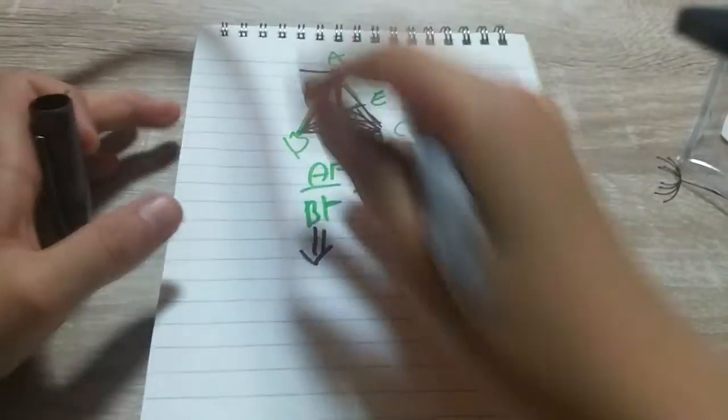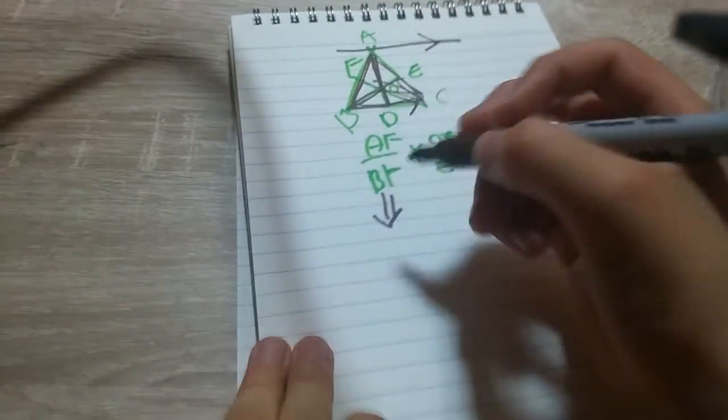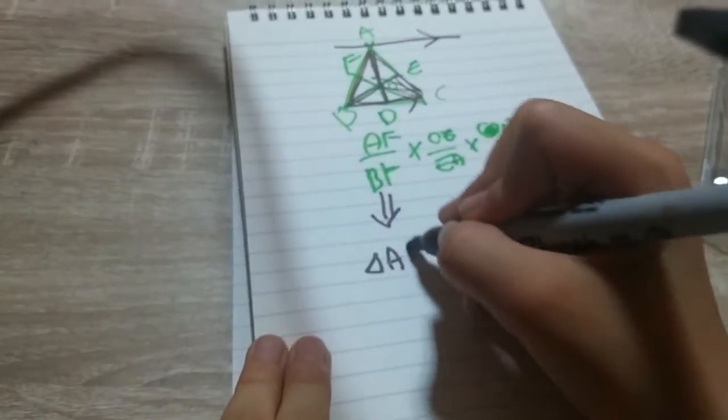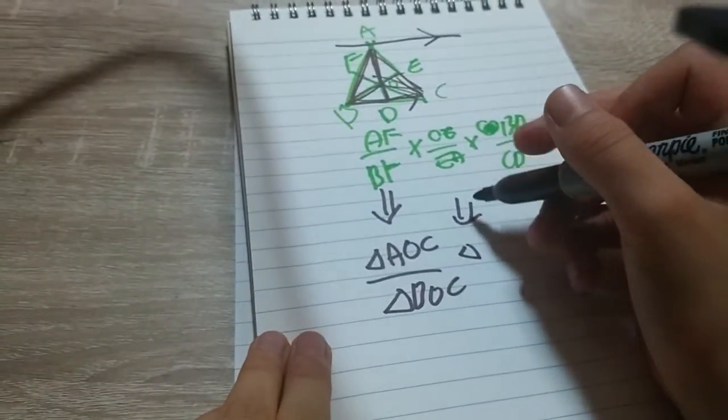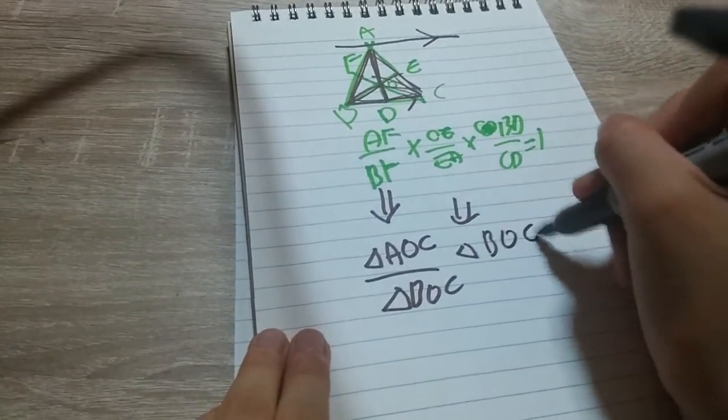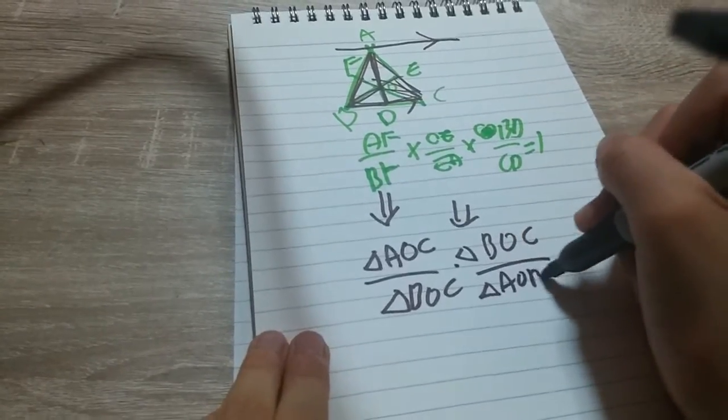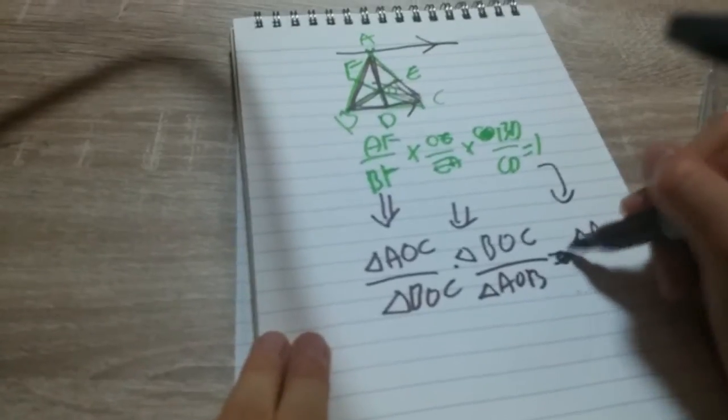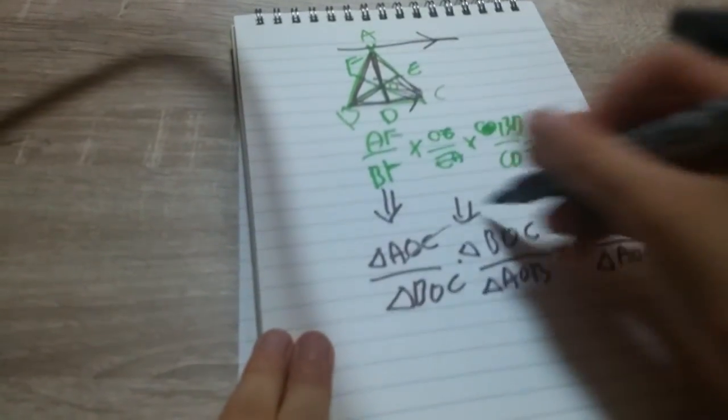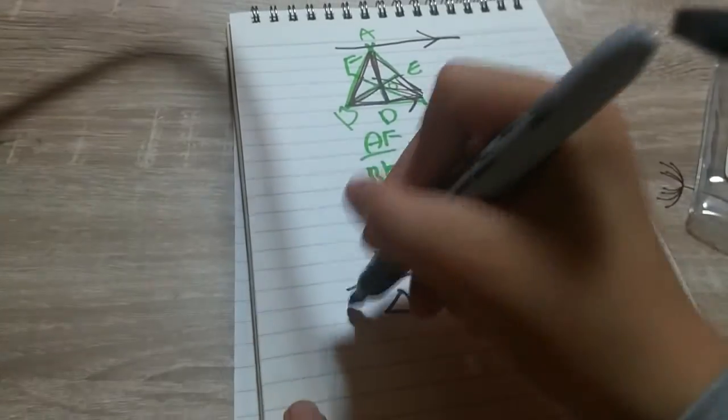AF over BF—we can use the same theorem we just proved three pages before. We can use this to prove that this one is triangle AOC over triangle BOC. And this is triangle BOA over triangle AOB, and this is triangle AOB over triangle AOC, which all cancels out to one.